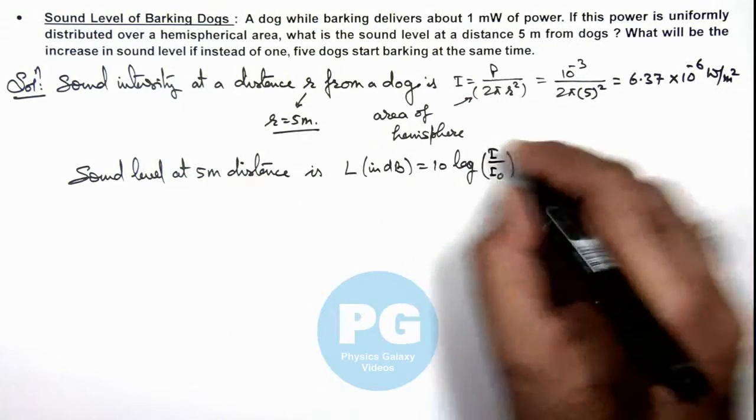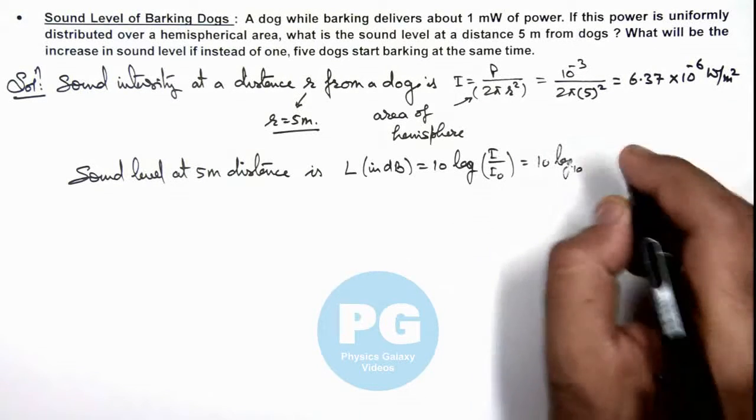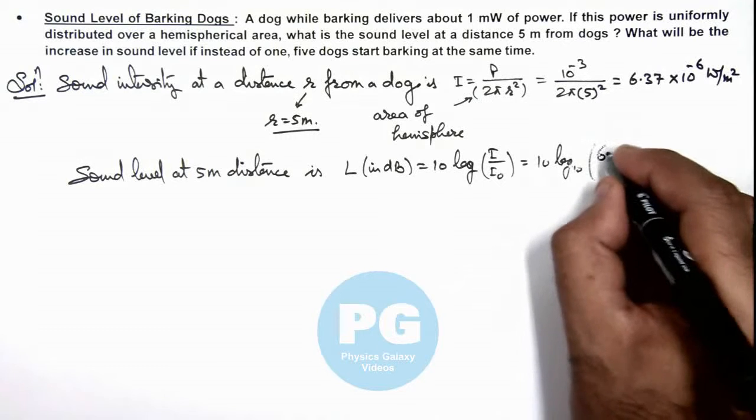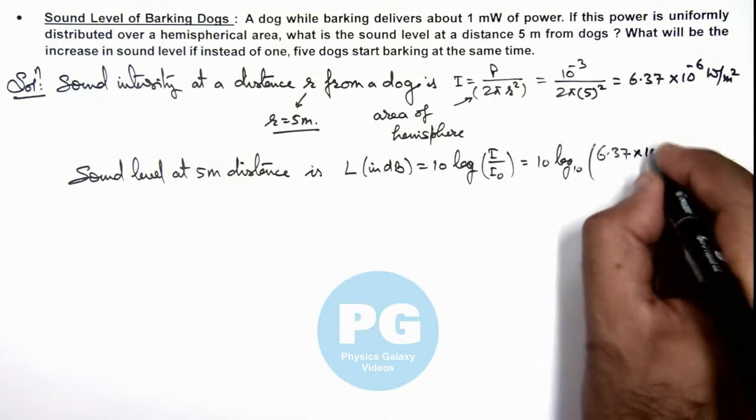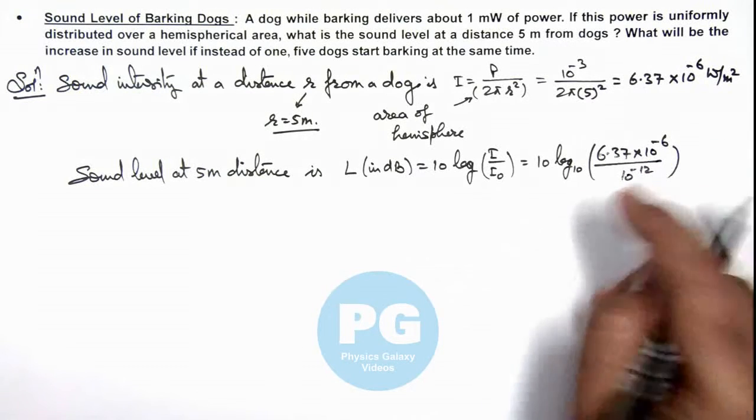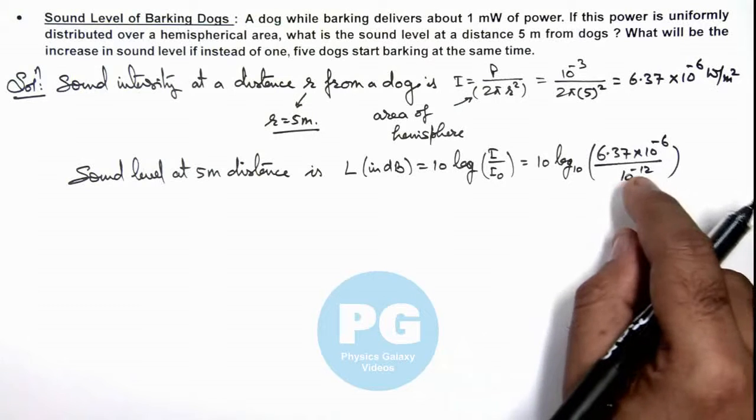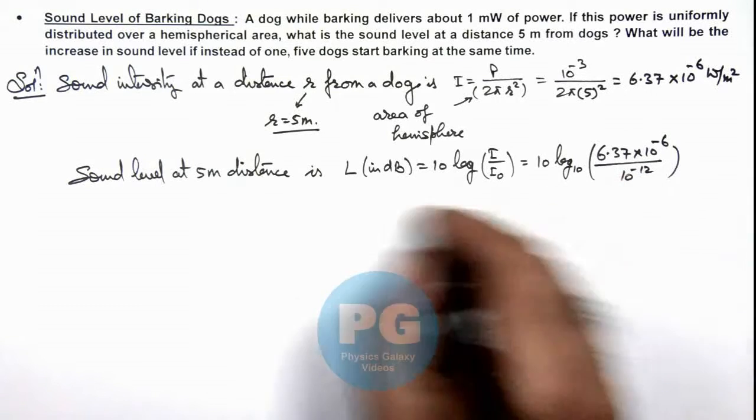So this is 10 log of, here we are taking log base 10, and this is 6.37 × 10^-6 divided by 10^-12. The value of reference intensity we take as 10^-12. If we simplify this value then...